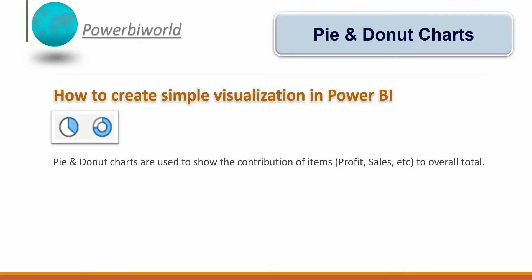Hello friends, welcome to Power BI World. In today's video we will create a very simple visualization in Power BI — pie chart and a donut chart. Pie chart and donut chart are used to show the contribution of items to the overall total. For example, to show the profit by category or what contribution each category makes to the overall total, we can use either a pie chart or a donut chart in Power BI. Visuals are the end results of any business intelligence report or dashboard, and Power BI has all sorts of visuals and limitless ways to customize them.